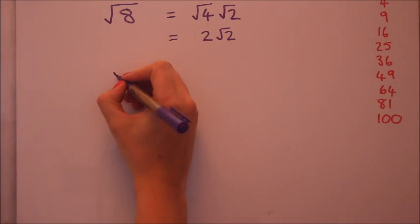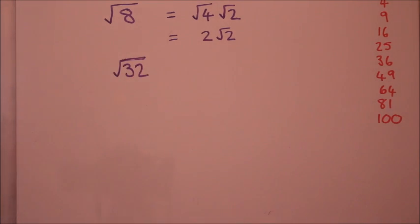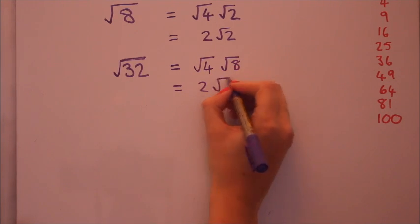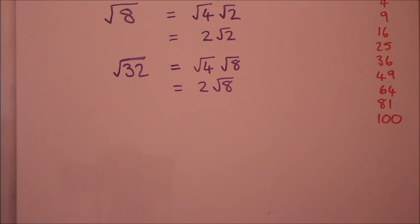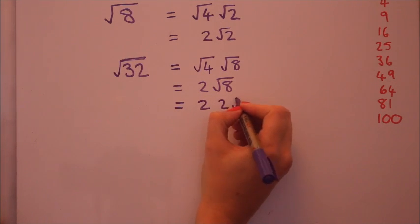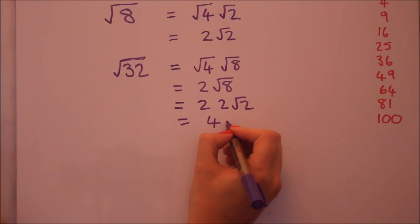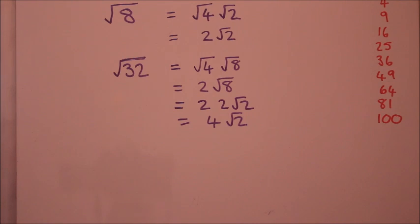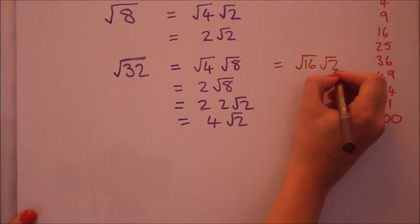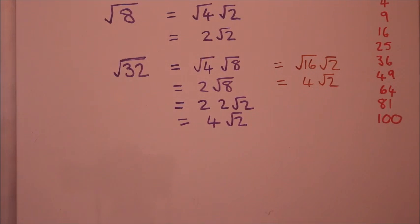Have a go yourself at simplifying root 32. You might have seen that 4 goes into 32, so that's root 4 times root 8, which is 2 times root 8. That's not as simplified as you can get it. Root 8 will still simplify further. So that's 2 root 2, which gives 2 times 2 root 2, which is 4 root 2. Now, you might have spotted instead that 16 goes into 32, which is root 16 times 2, which is 4 root 2. So it gives the same answer, but obviously if you get the biggest square number possible, then it's a bit easier and saves you some time.